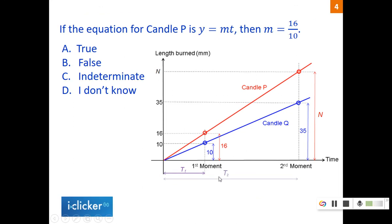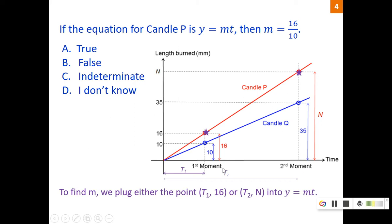So the fourth question now is the equation for candle P. If the equation is y equals mt, then can we conclude that m equals 16 over 10? So is this statement true or false? Put in your answer. Now, to find m, we need the slope of the line, since this is the equation for candle P.